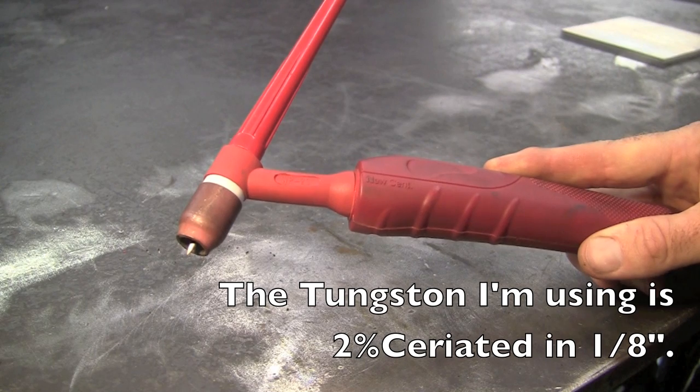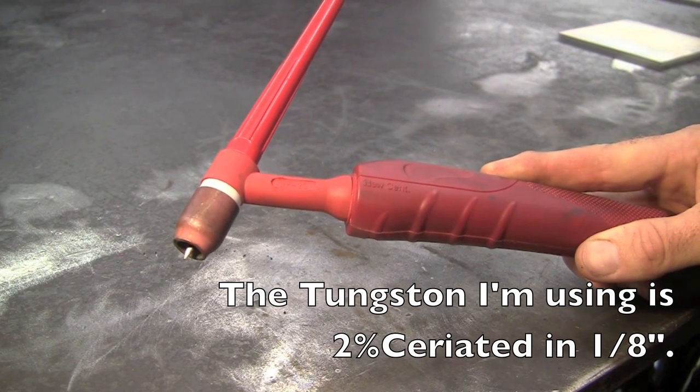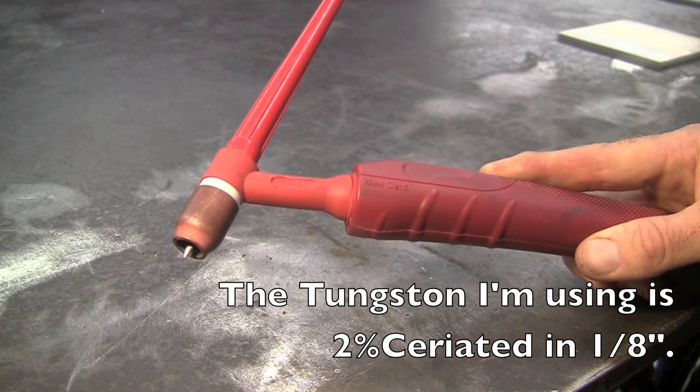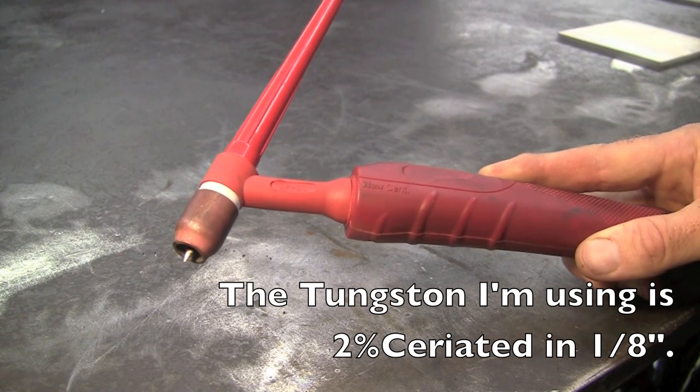This is the torch setup. You can see I got about 3/16" of the tungsten sticking out and I'm flowing right about seven and a half to eight liters a minute on the argon flow regulator.